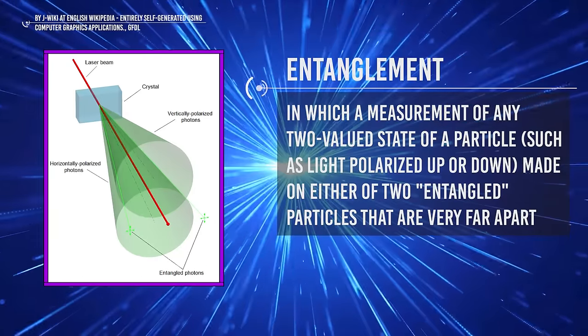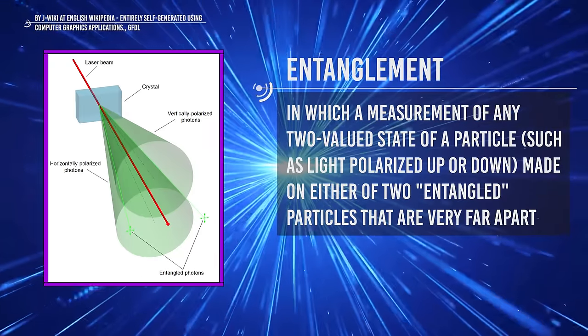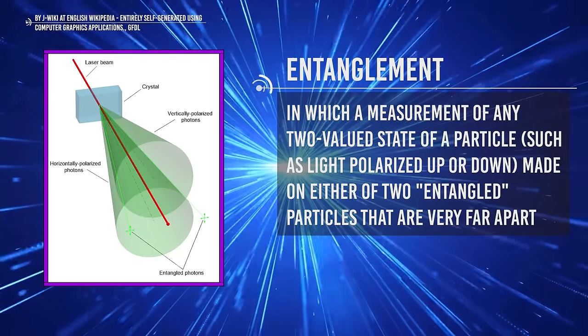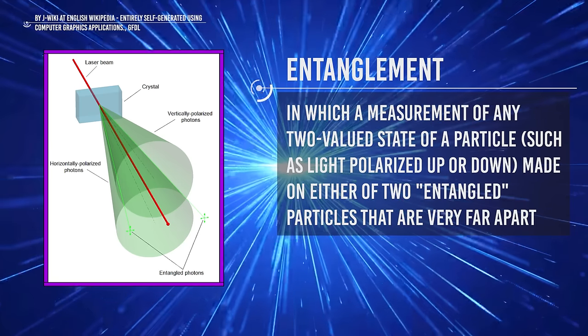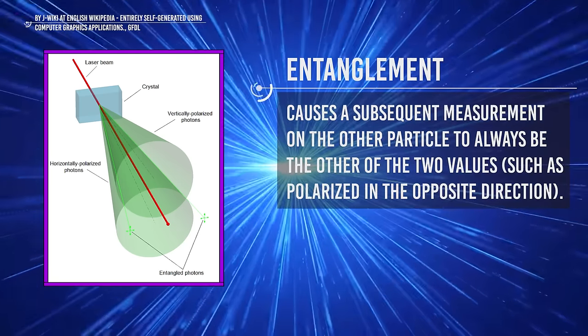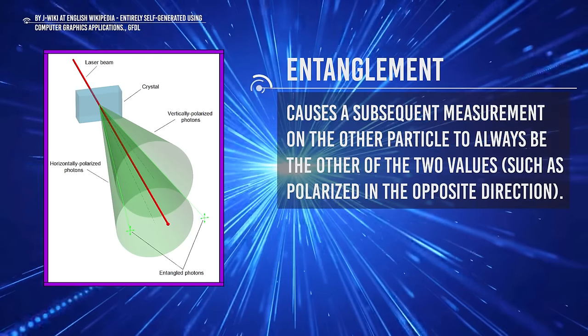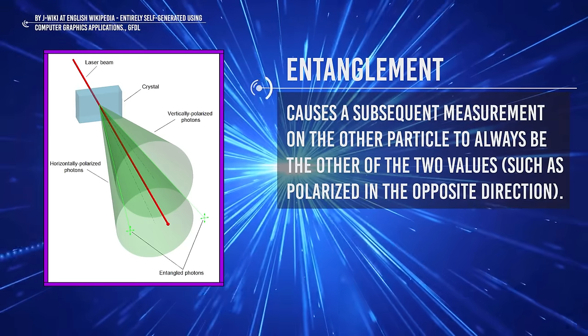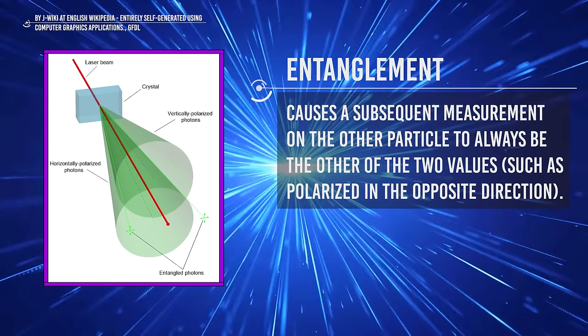Another example is entanglement, in which a measurement of any two-valued state of a particle, such as light polarized up or down, made on either of two entangled particles that are very far apart, causes a subsequent measurement on the other particle to always be the other of the two values, such as polarized in the opposite direction.